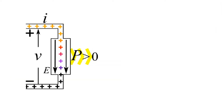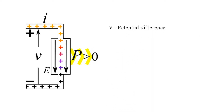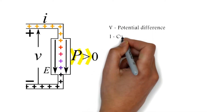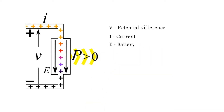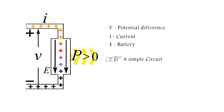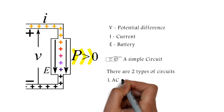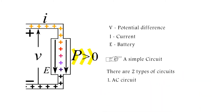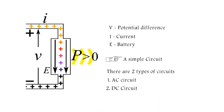This is a simple circuit shown in the image. V is the potential difference across the conductors, I is the current flowing through the conductor, and E is the battery. There are two types of circuits: the AC circuit and the DC circuit. This image shows the DC circuit.